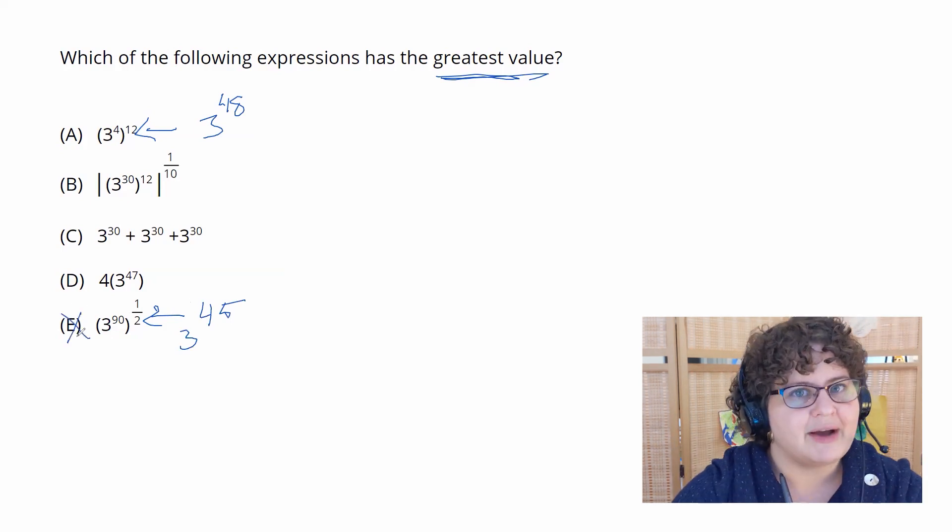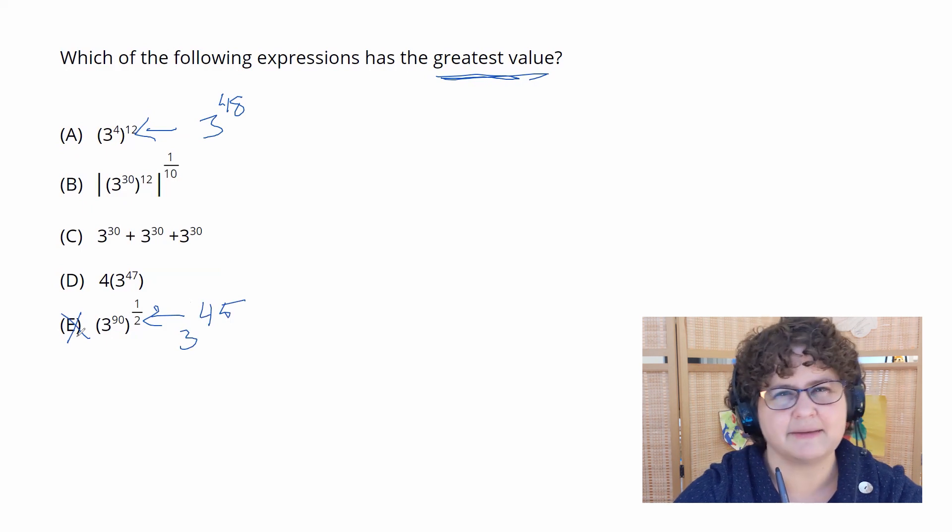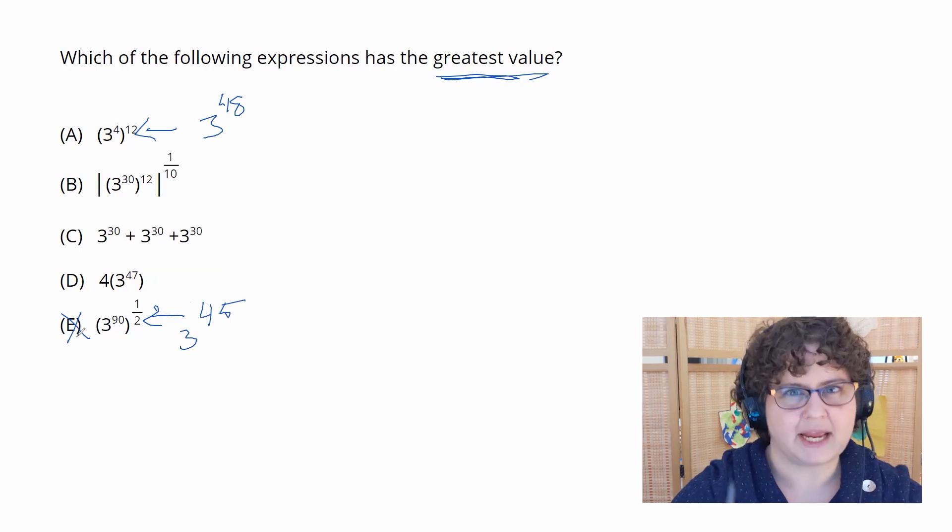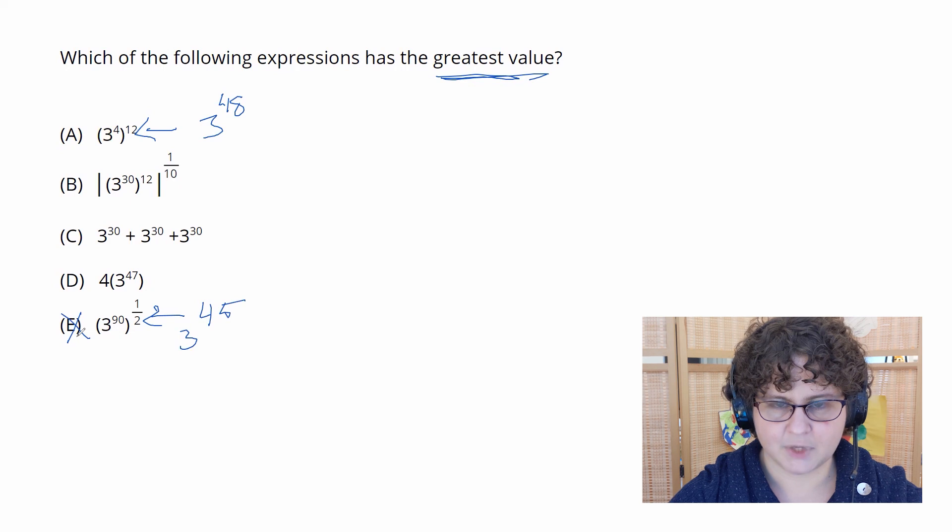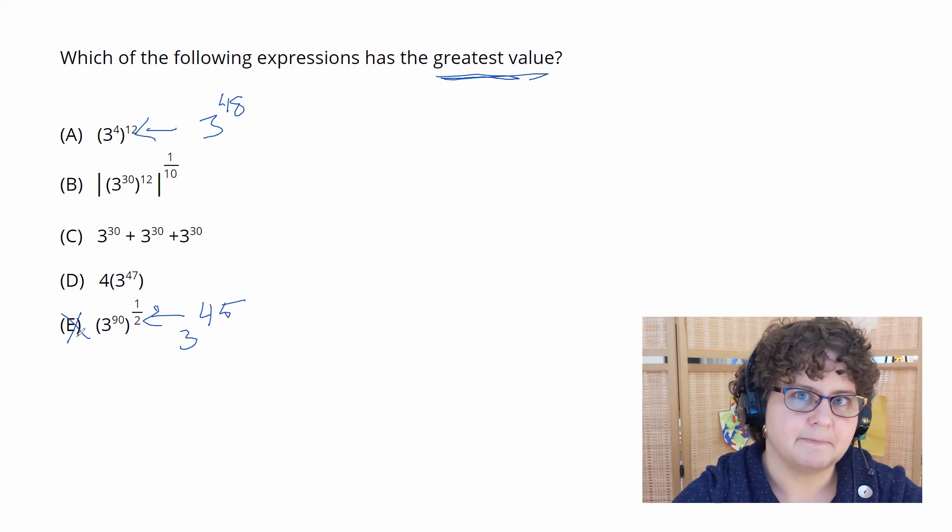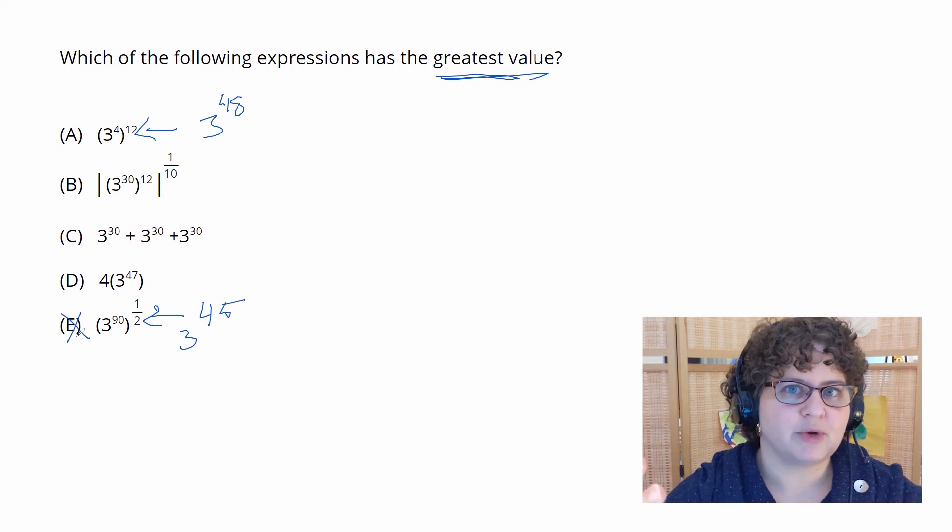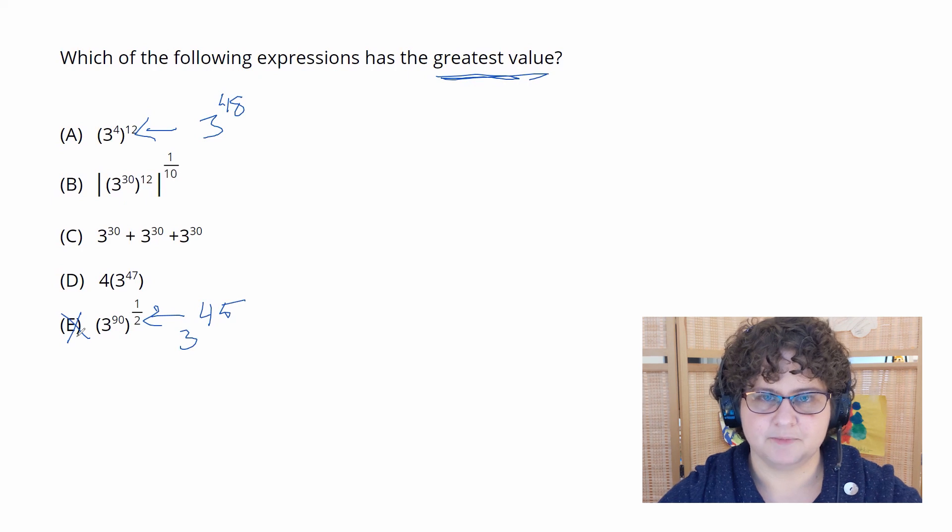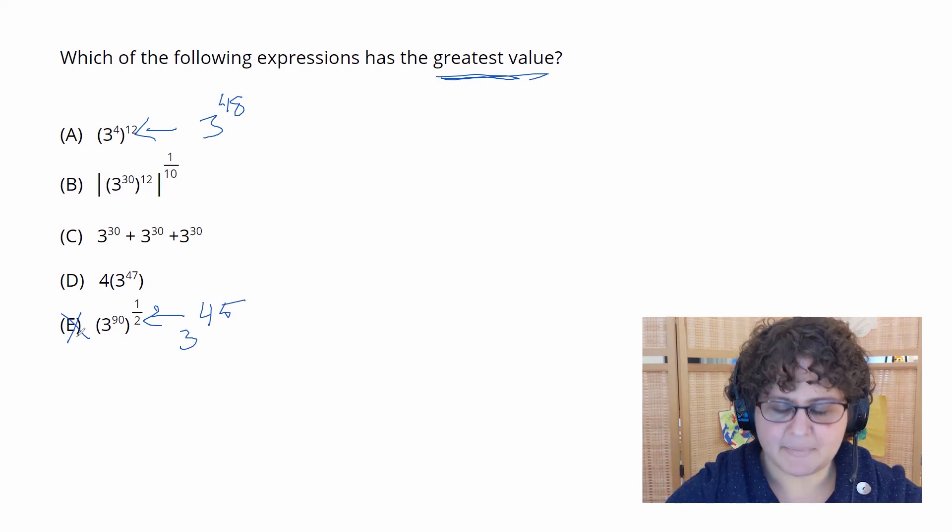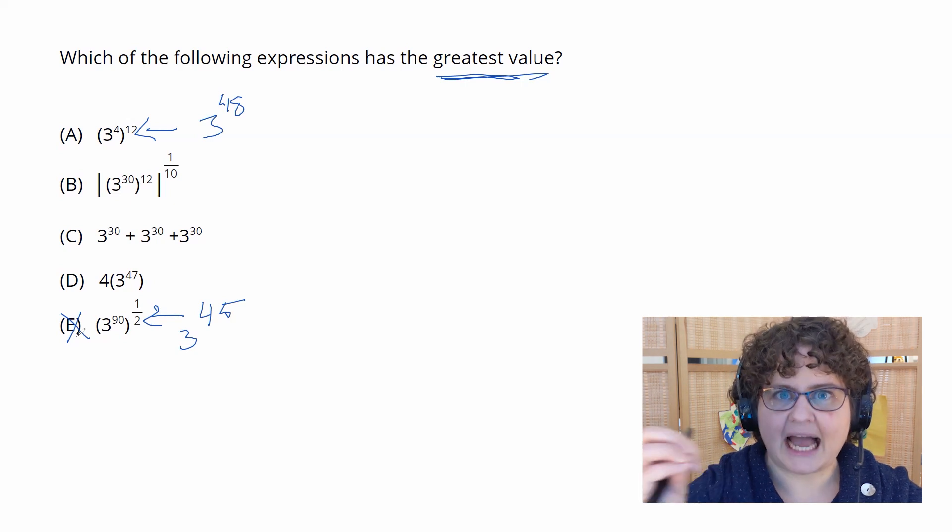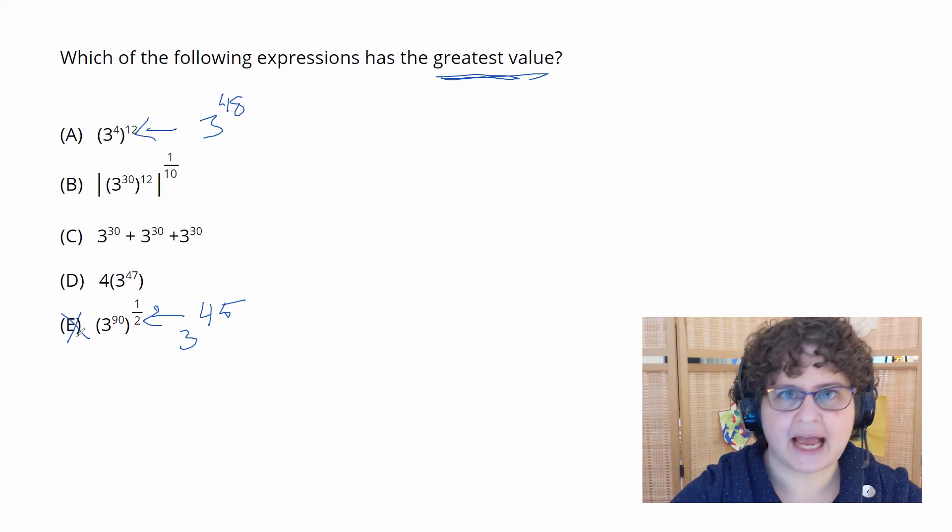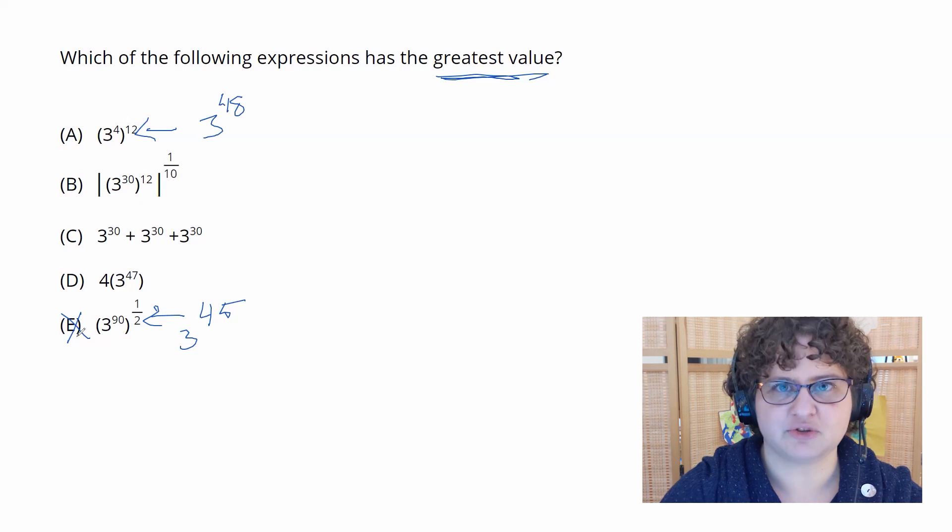We also now have a relatively simple number to use to compare to the other three answer choices. So right now our front runner for the biggest term is 3 to the 48th. Take a look at C. C has got three 3 to the 30th. Now make sure that you are very clear on how to simplify this. We're not going to add the 30s or multiply the 30s or anything like that.